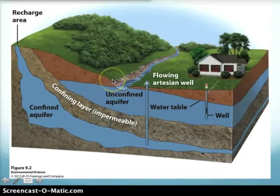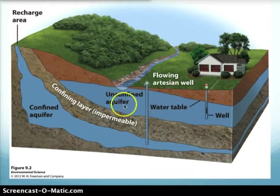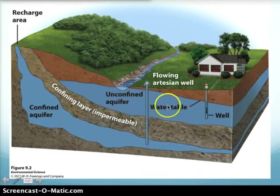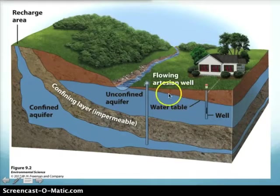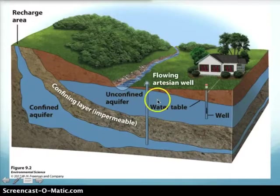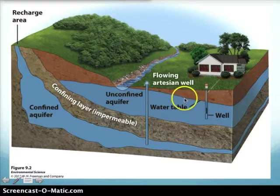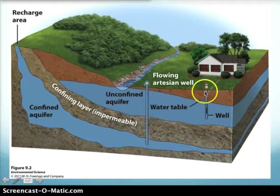Starting with groundwater: groundwater is water that percolates down through the soil and into permeable, porous rock. We call this region an aquifer — the small spaces found within permeable layers of rock and sediment where water sits. The top of the aquifer is what we call the water table, a term you'll hear often when people are drilling wells.